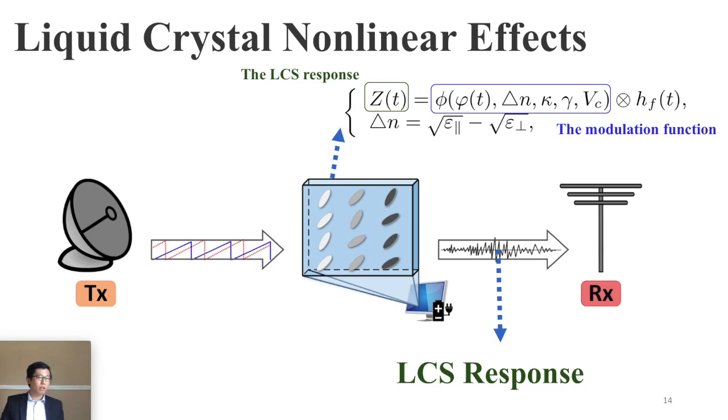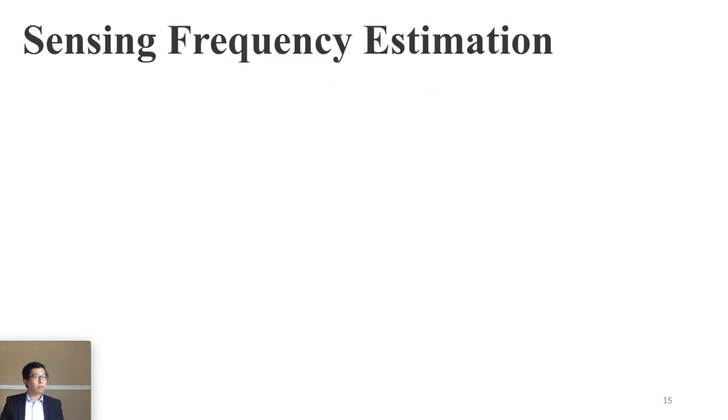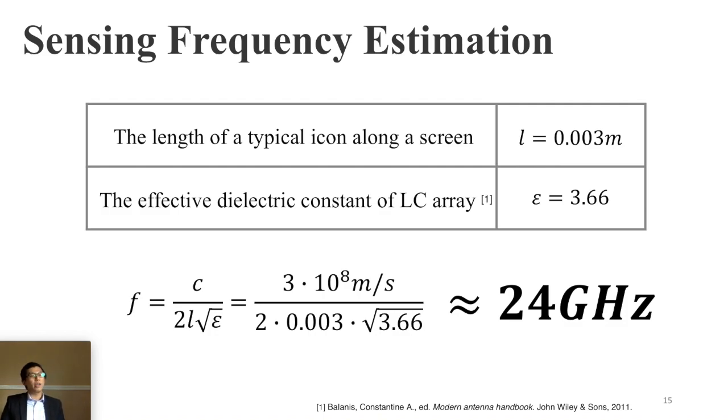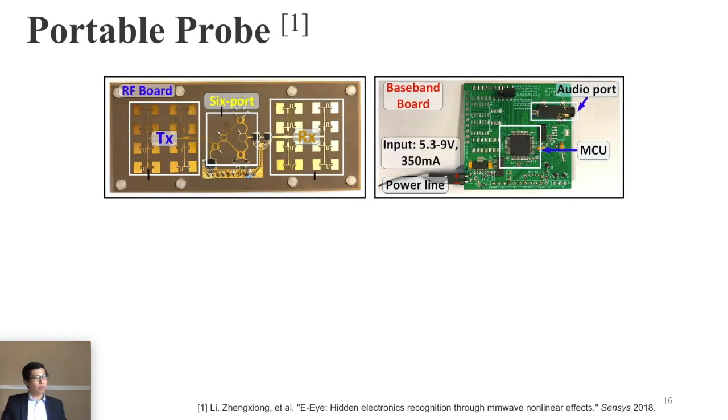And then the next question: how to estimate the sensing frequency? Also the key towards the second challenge. So here we observe that the typical lens icon among the screen is usually 3 ms. After calculation, we found 24 GHz is the best solution for us in this application. And also 24 GHz has other advantages, like very good to handle the non-linear response and also not restricted by ISM.